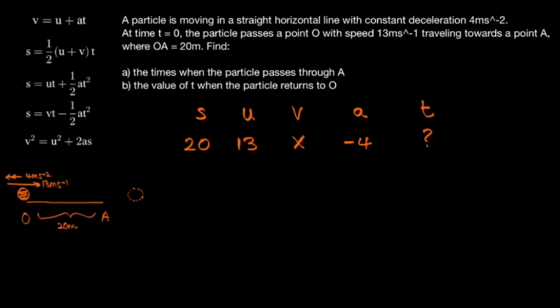So all we need to do now is plug the numbers that we have into our equation. So S equals UT plus a half AT squared. 20 is S. It's equal to 13T, so U times T. 13T plus a half AT squared. A half A is minus 2, so we have minus 2T squared. So if we rearrange our equation a little bit we end up with 2T squared minus 13T plus 20 equals 0.